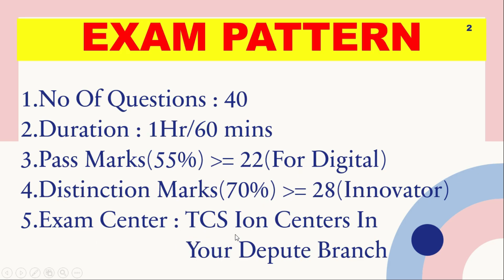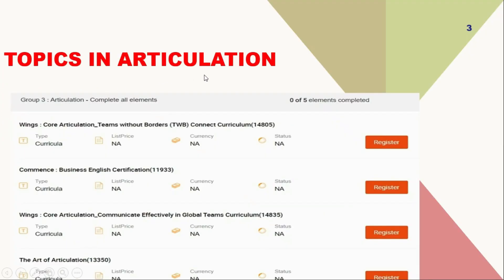Exam centers are TCS ION centers at your debut branch. There are four topics with one end exam for course completion. First is core articulation: Teams Without Borders, covering multicultural and agile teams. Next is Business English — basic business English covering listening, reading, writing, email, and etiquette. Third is core articulation: Communicate Effectively in Global Teams. This curriculum aims to develop intercultural communication and collaboration skills in multicultural and multi-location teams.